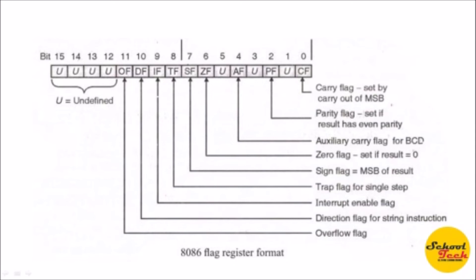The Zero Flag (ZF) indicates whether the result is zero or non-zero: when the result is non-zero, this flag is reset to zero; when the result is zero, this flag is set to one. The Auxiliary Carry Flag (AF) represents the carry or borrow generated after the addition of the lower 4 bits, which includes the LSB.